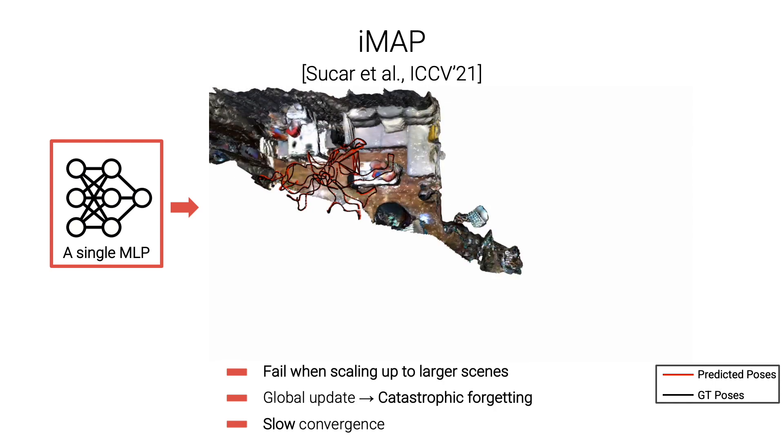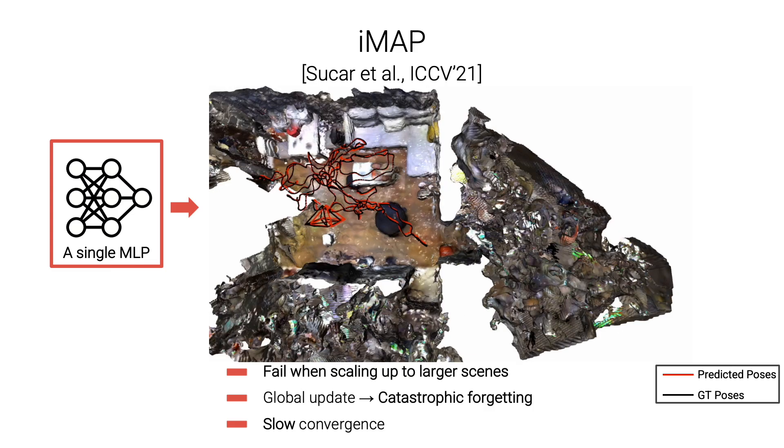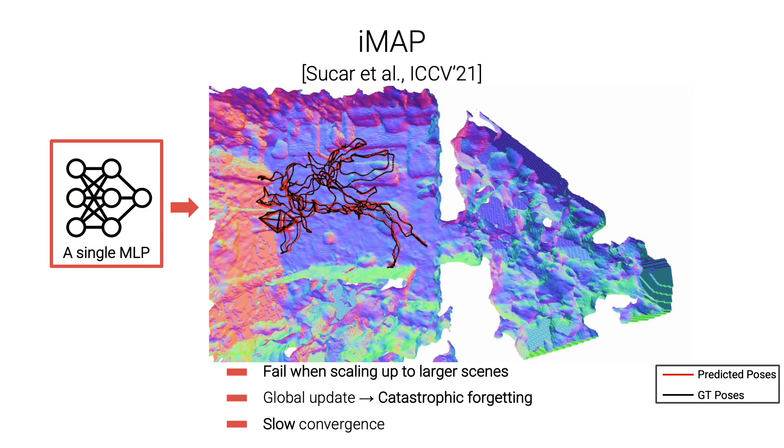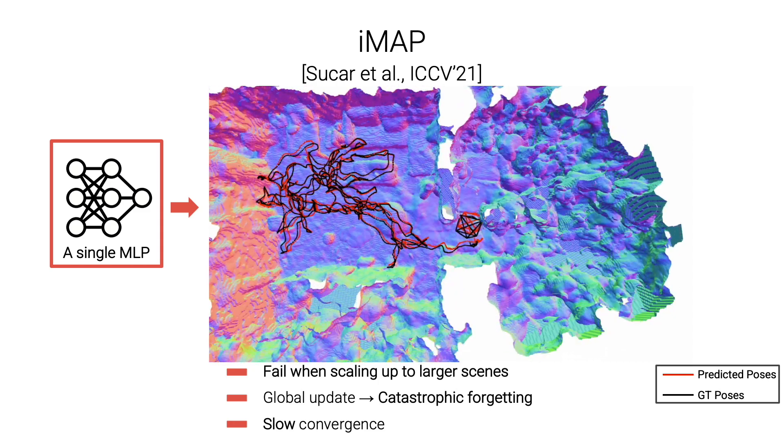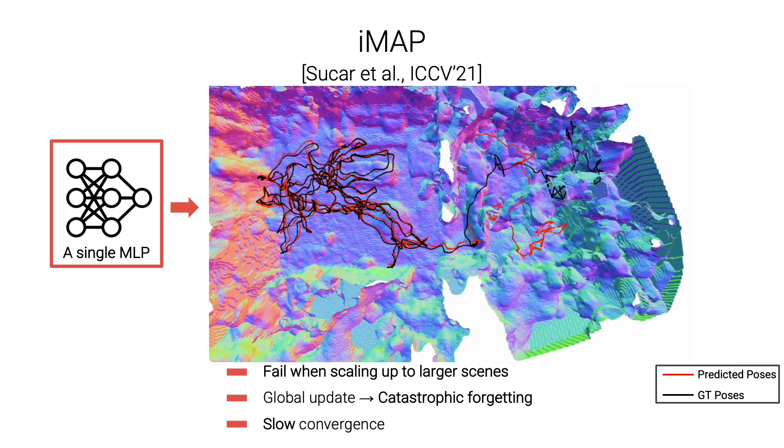First, IMAP fails when the scene gets larger due to the limited capacity. Second, every new input RGB d-frame can update the entire MLP so they suffer from the forgetting problem. Third, optimizing the entire MLP is quite slow, especially when the MLP gets larger.